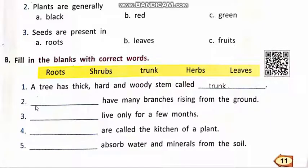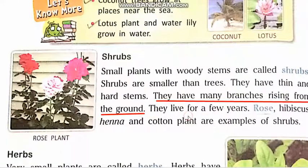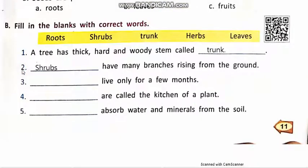Number 2. Dash have many branches rising from the ground. Students, look. A tree has a thick, hard and woody stem called trunk. And the next is, they have many branches rising from the ground — these are shrubs. Shrubs have many branches rising from the ground.